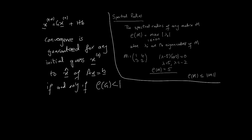Now we get to this important property which has to do with the initial guess. In the previous video we looked at the general form of iterative methods: x_{k+1} = G·x_k + H·b. Convergence is guaranteed for any initial guess x_0 to the true solution x-hat of Ax = b if and only if the spectral radius of G is less than 1.